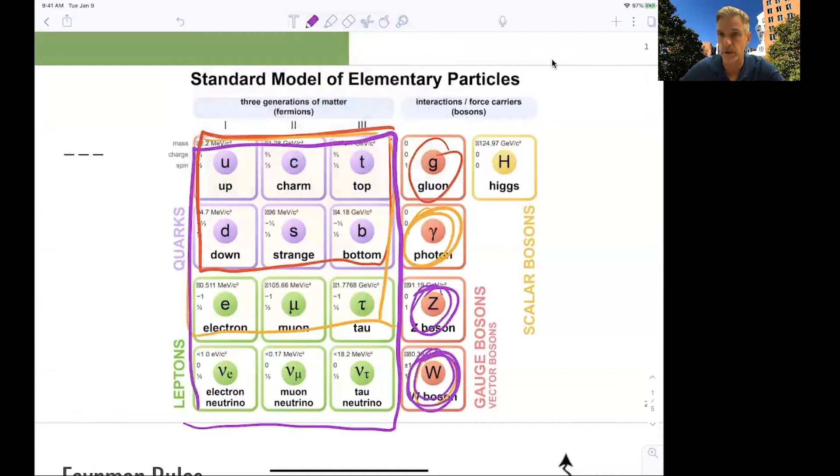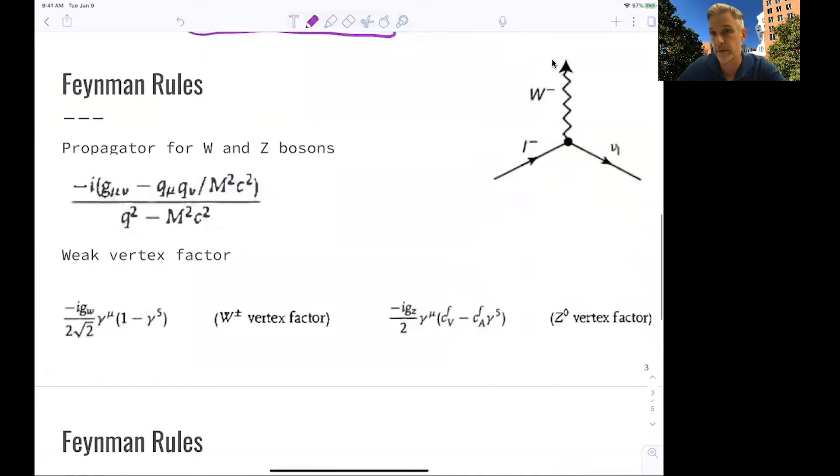As an introduction, we start with the Feynman rules. Having the Feynman rules in place and the cookbook, the recipe in order to calculate decays and scattering processes, this is all we need in order to get moving. For example, we can look at this vertex here, or this component of a Feynman diagram. What we need to analyze this is the propagator for the W and Z boson and the vertex vector.